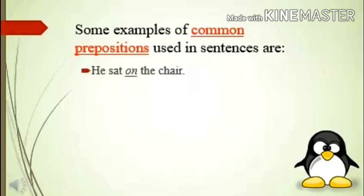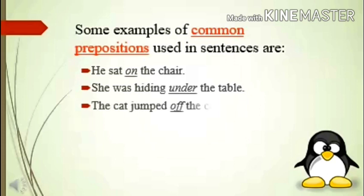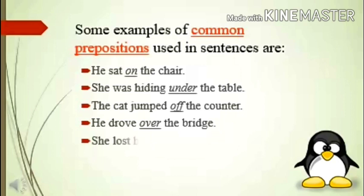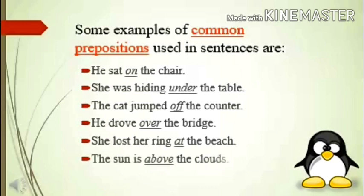She was hiding under the tree (under). The cat jumped off the counter (off). He drove over the bridge (over). She lost her ring at the beach (at). The sun is above the clouds (above). She lives near her workplace (near).